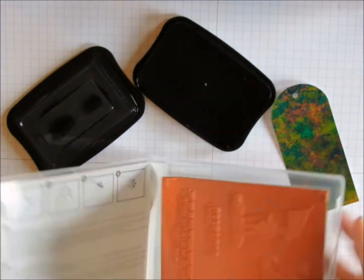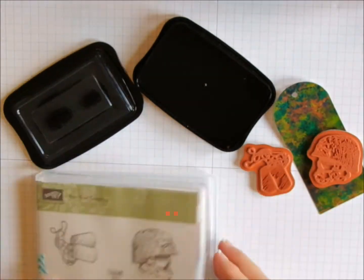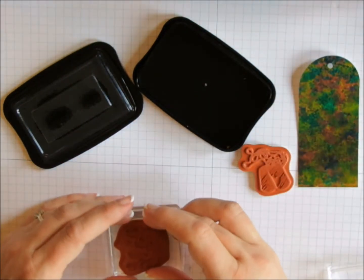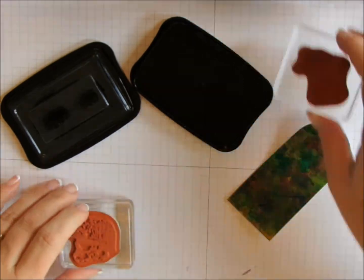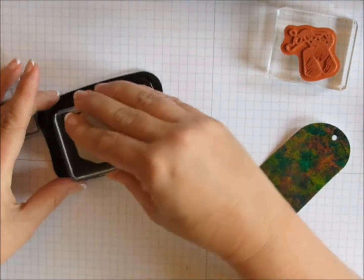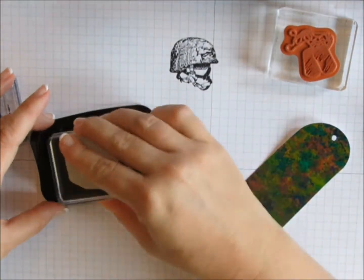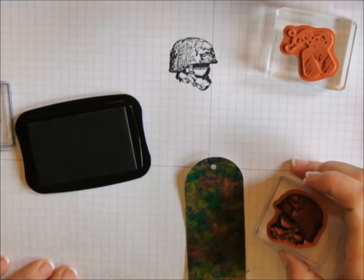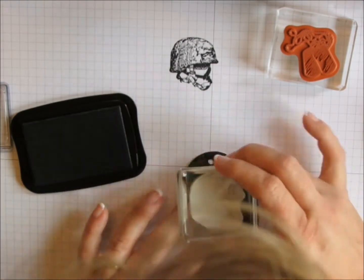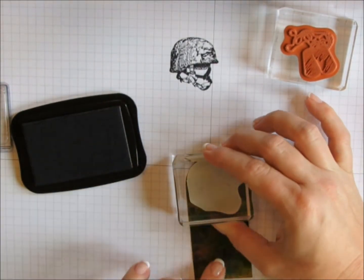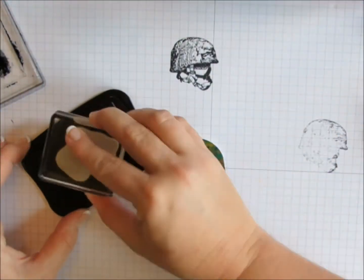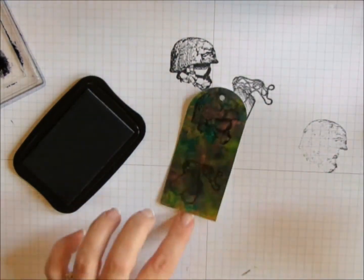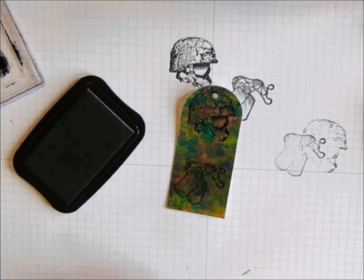I've got this stamp set from Stampin' Up. It's called For Your Country. And I'm going to stamp with black Stazon ink onto that tag. This is my first time using this stamp set. And when I get a new stamp set, I like to test it out just to make sure that it's going to give me full coverage on the stamping. So that's why I stamped off on the grid mat. When I'm done stamping, I will stamp off on my grid mat to get rid of excess ink. And that way I don't have to clean my stamp and scrub quite so often.